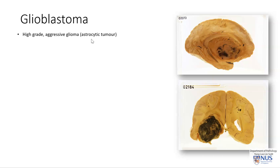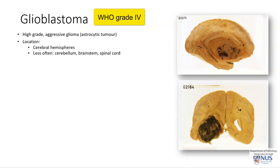Glioblastomas fall into the subset of astrocytic tumors and by definition they are high-grade tumors. Astrocytic tumors can range from grade 1 to grade 4 in the WHO classification system. Glioblastomas are at the highest end — they are grade 4 tumors. They are most frequently located in the cerebral hemispheres, but can also be found in the cerebellum, brainstem, or even the spinal cord.